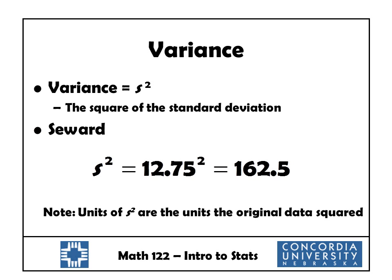Our third measure of variation is the variance, denoted s-squared — it is simply the square of the standard deviation. For Seward, we square 12.75 to get 162.5 as our variance. The units of variance are the original data units squared — so here, degrees Fahrenheit squared.